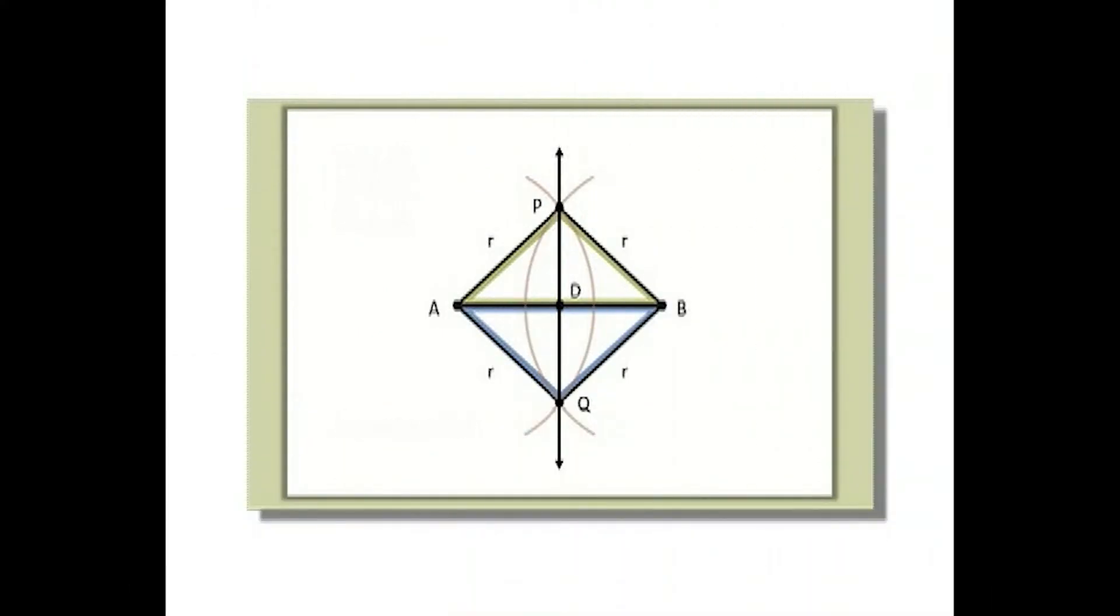So if these two triangles are congruent, what does this say about four angles at A and P? They're all congruent to each other. Very good, Lea.